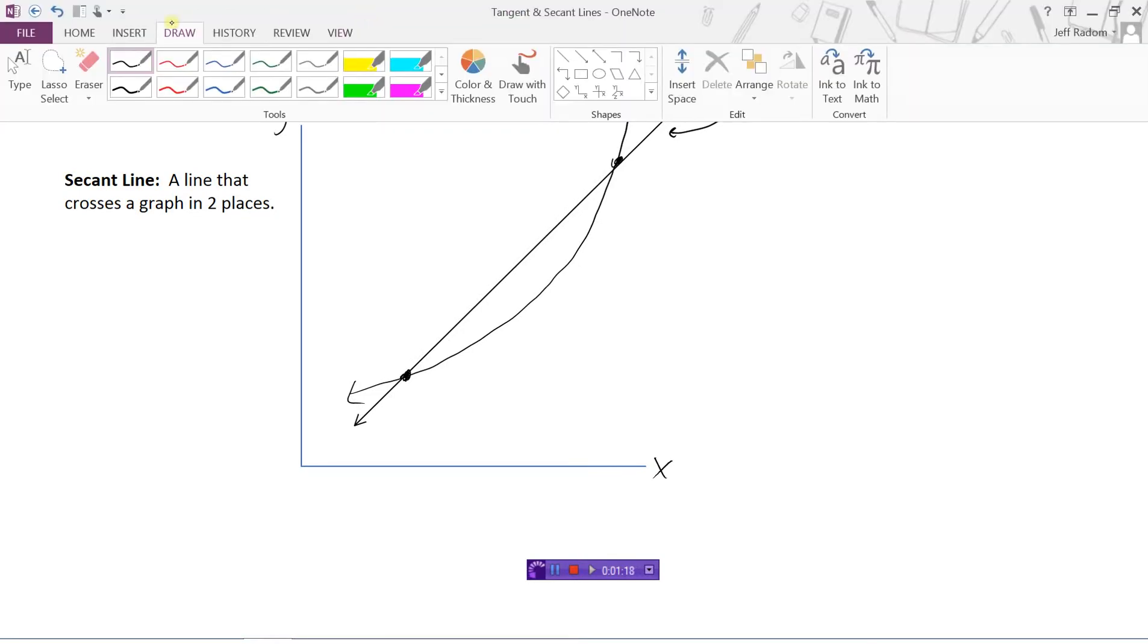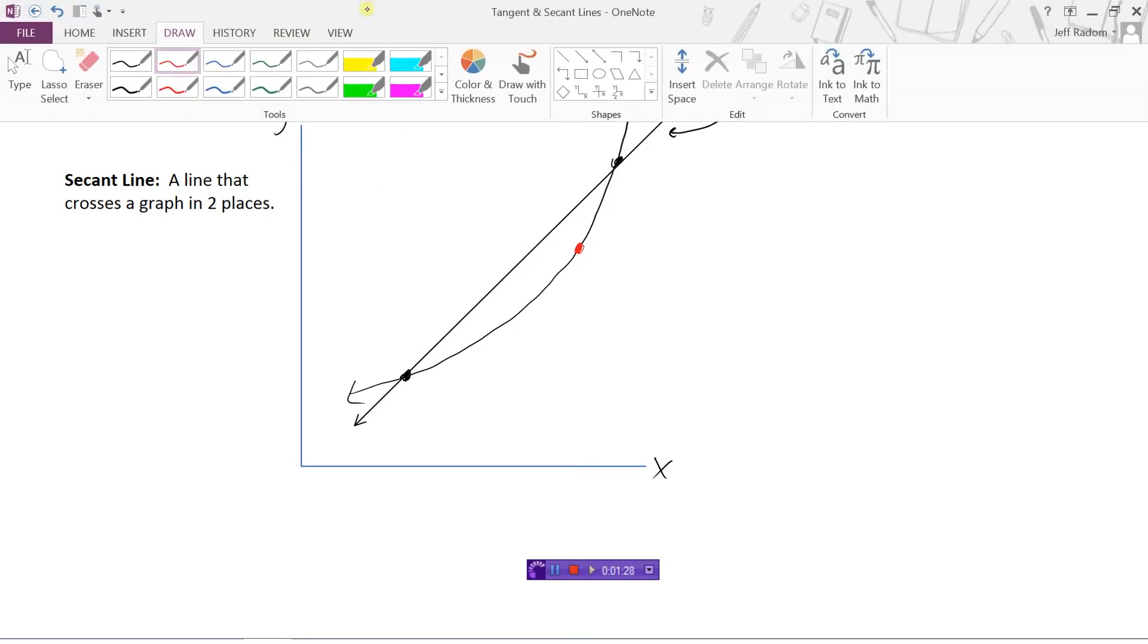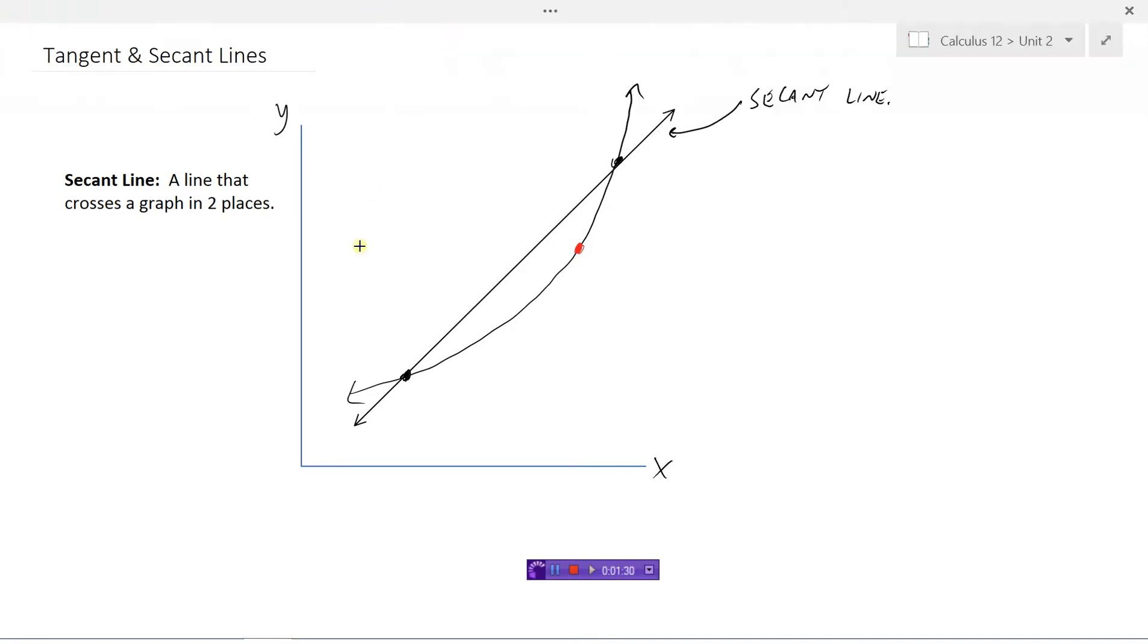So how is a tangent line different? Well let's swap colors here and let's say I drew a line that crossed this graph in just one place. So now this red line here just nicks this curve at this one place.